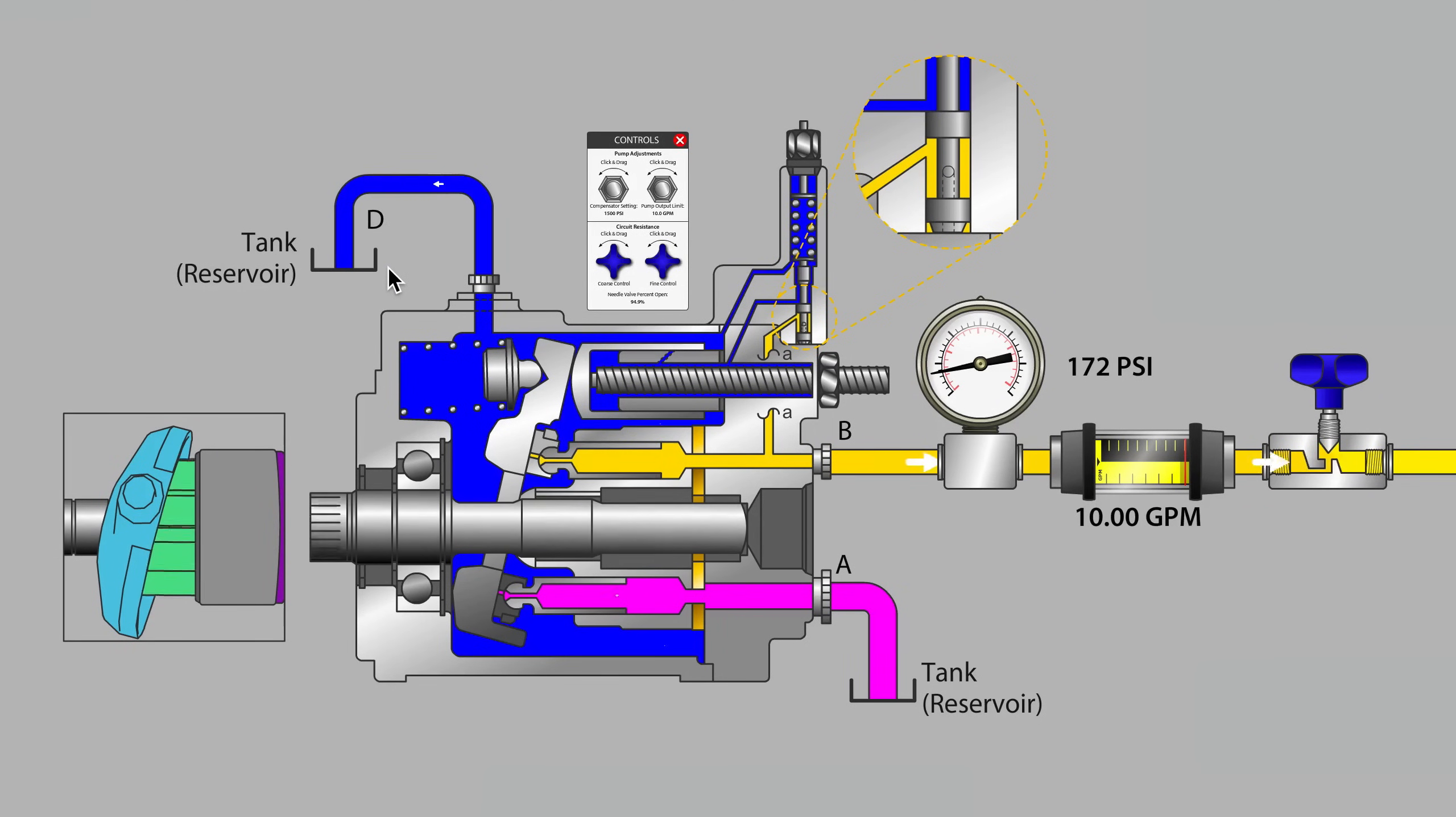Most pressure compensated pumps have at minimum three main hoses connected. There's an intake line coming from the tank to feed fluid to the pump. There will be an outlet or output port sending out flow to the hydraulic system where we have valves and cylinders.